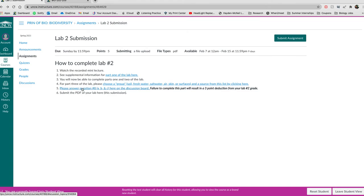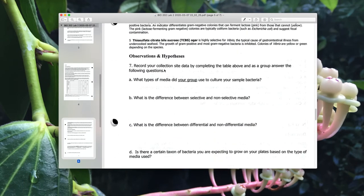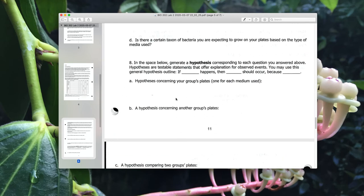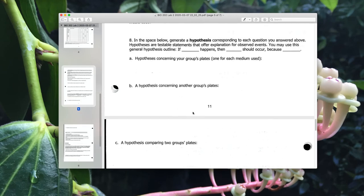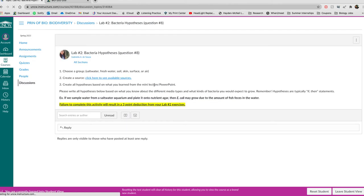Then what you need to do is go to our discussion board. So I need you to answer question eight, which is on the lab manual here. If you scroll down, these answers should be recorded in your exercises. And then question eight, you can leave blank on your exercises, but answer these questions in the discussion boards. You'll click here and you'll see, you chose a group, right? And then you're going to choose a source.